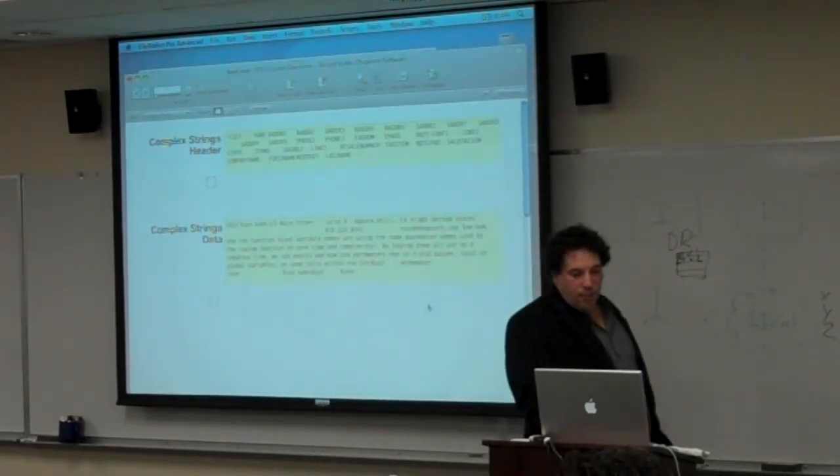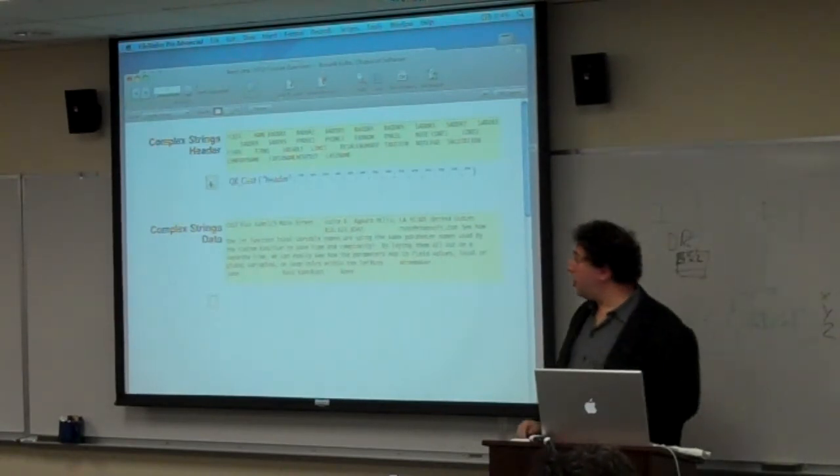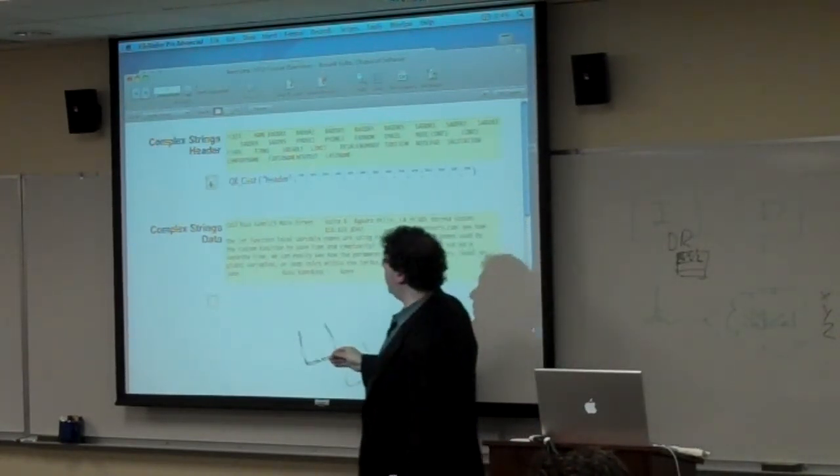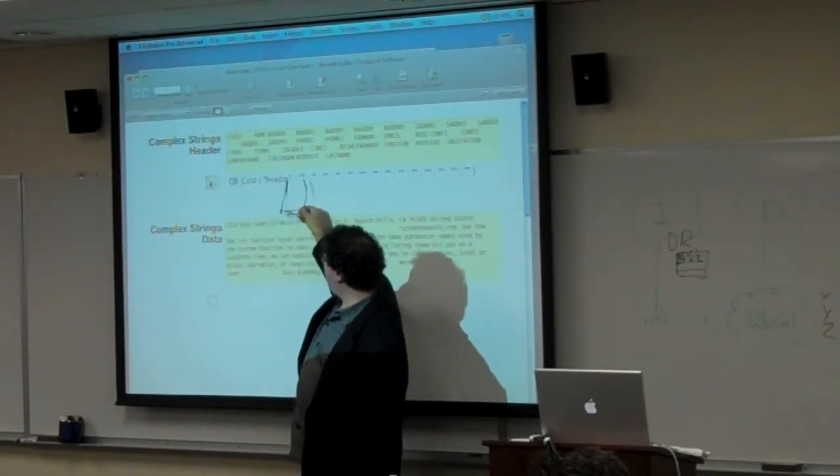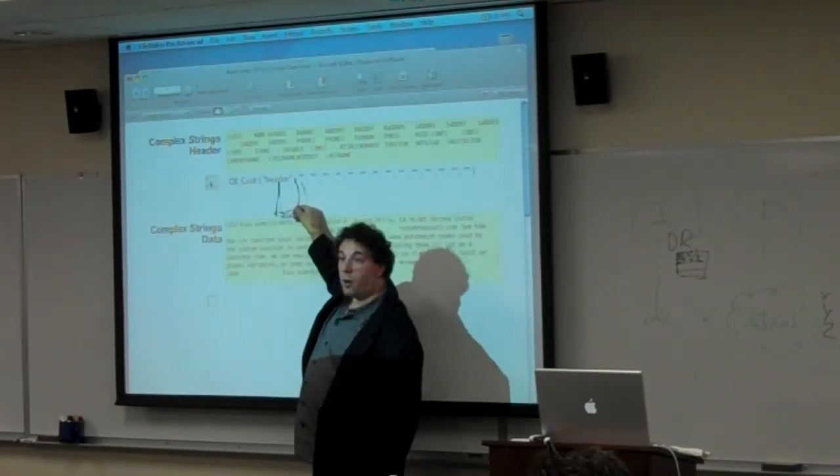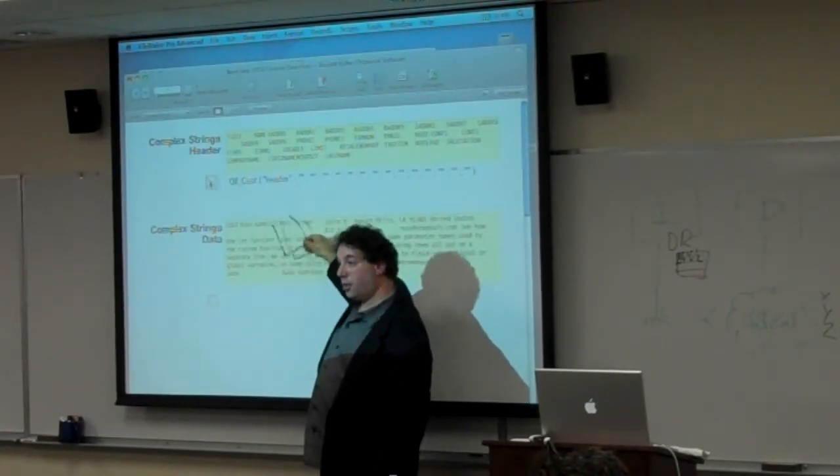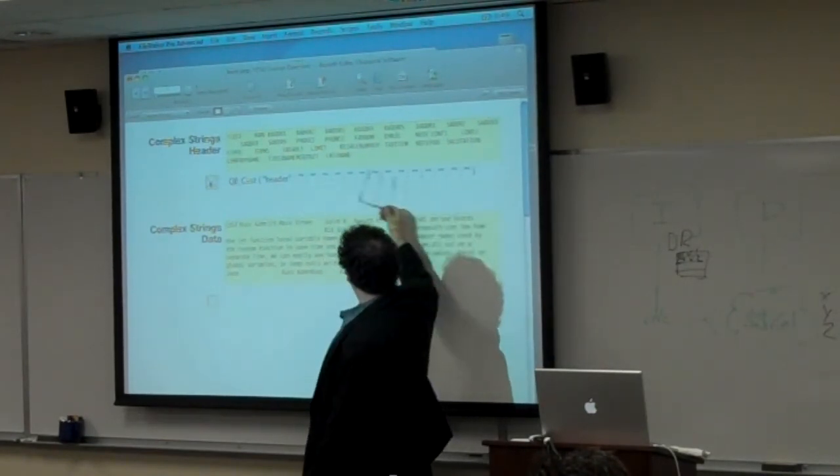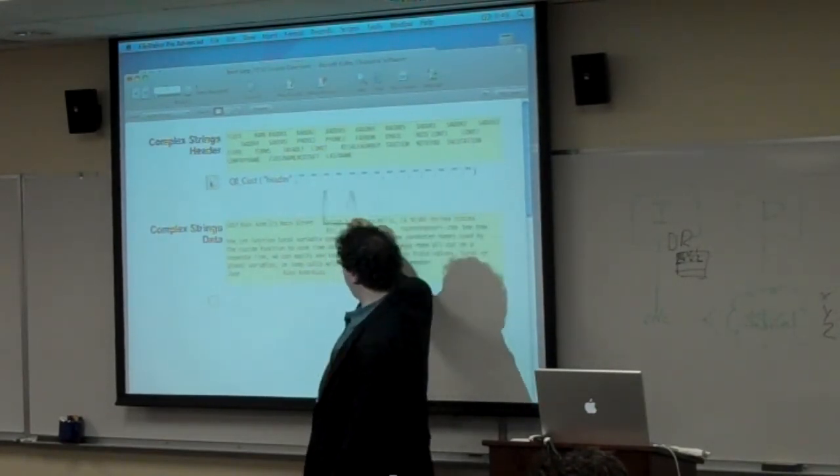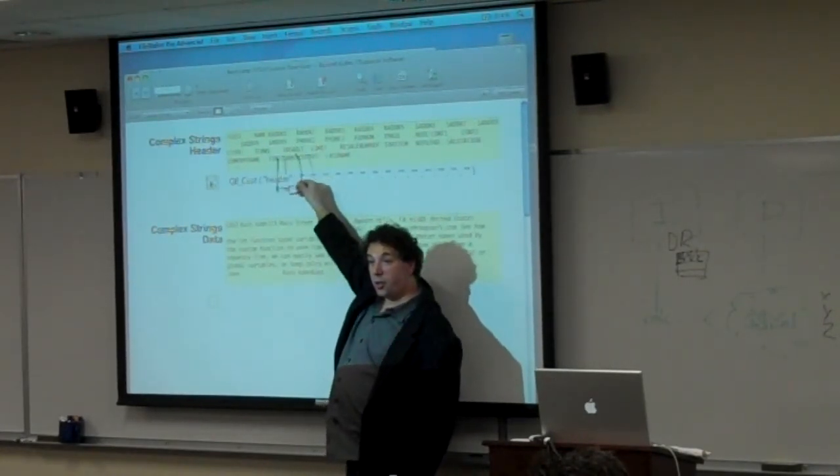So if we think about this, okay, I wrote a custom function called qbCust, for QuickBooks customer, where the first value I passed it is what type of data do I want. Do I want the header, or do I want the data? But from the same custom function. So in this case, all the other parameters, I'll show you this in a minute, are empty. Okay? Because I'm just looking for the header. So this is, like, hardwired into the custom function.